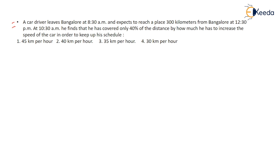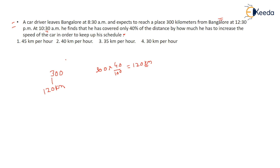Next is the concept of average speed. A car driver leaves Bangalore at 8:30 AM and expects to reach a destination 300 km away at 12:30 PM. At 10:30 AM he finds he has only covered 40% of the distance. 40% of 300 km = 300 × 40/100 = 120 kilometers covered so far.